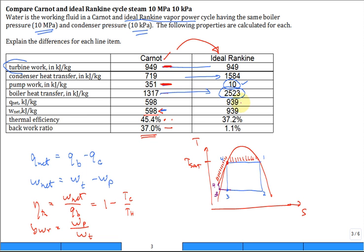The net work out and net heat in are larger for the ideal Rankine, from a lot more heat coming into the boiler. The key here is thermal efficiency—how much of that heat energy did you convert into work? The thermal efficiency of the ideal Rankine is lower, which is not good, but the Carnot is impractical. The ideal Rankine is how close you can get to a Carnot.